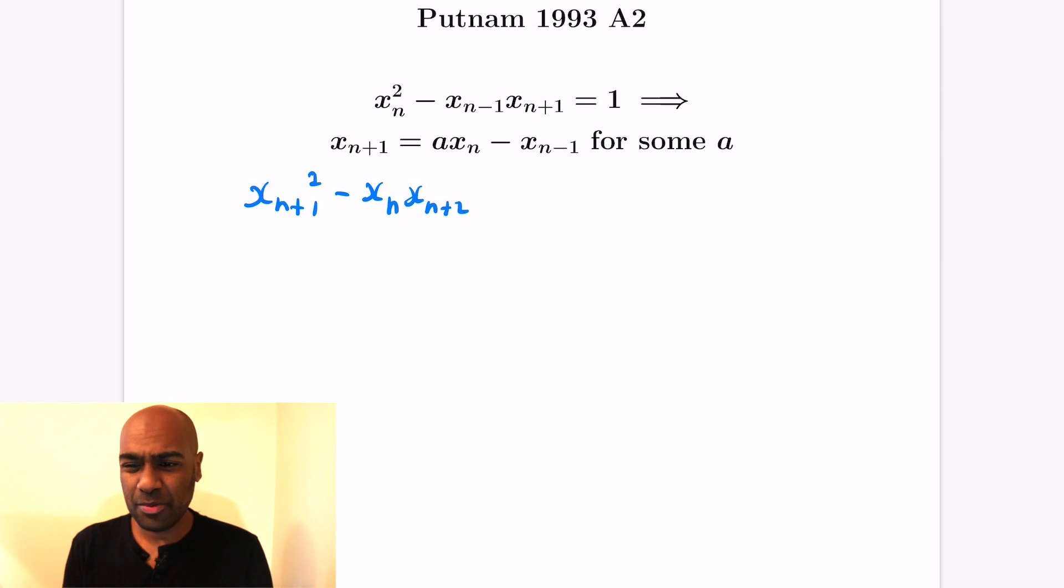So how do you actually establish something like this? It's not clear what to do at first, but one of the things you want to do is hopefully prove the recurrence relation holds inductively by figuring out what x_{n+2} is explicitly.